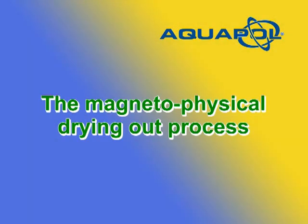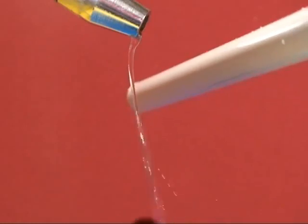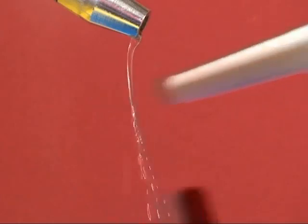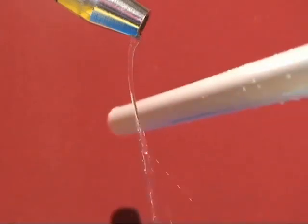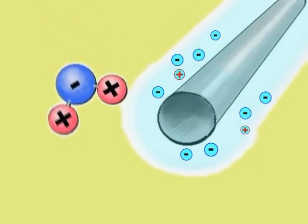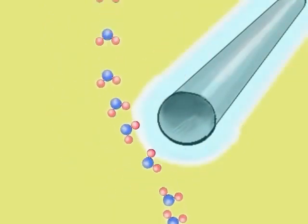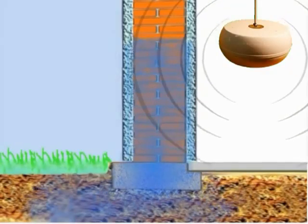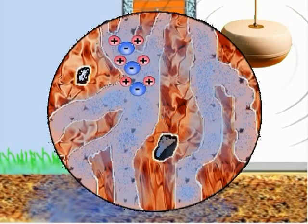The magnetophysical drying-out process: water has special properties, and we get many interesting phenomena when energy influences water. For instance, when you rub a woolen scarf against a plastic tube, you create an electrostatic energy field. Even this small energy field can deflect a two-millimeter-thin thread of water. Certain energy forms can direct water molecules.